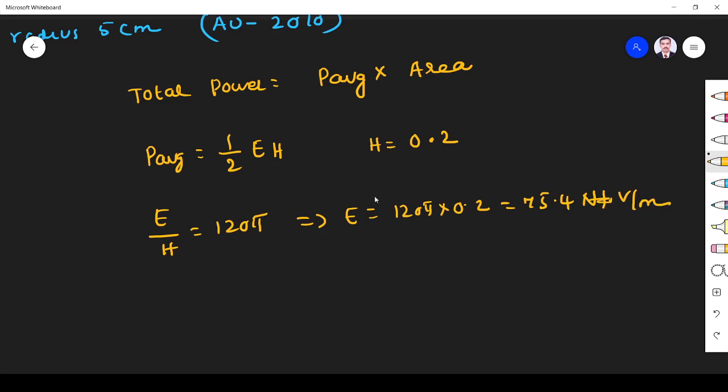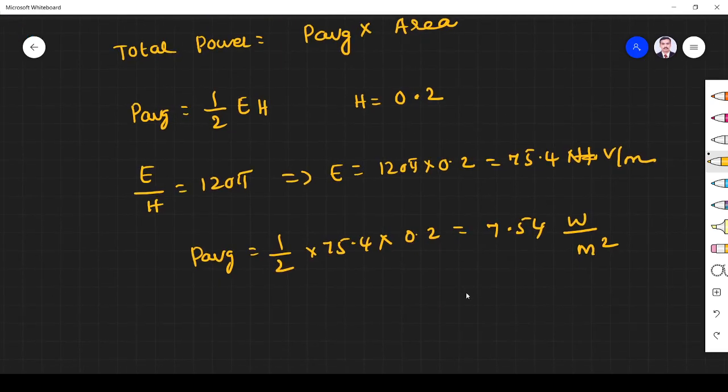Now I got e value and h value. So average power is given by 1 by 2, e value is 75.4, h value is 0.2. If I simplify this, what I get is 7.54 watt per meter square. What I want is total power.